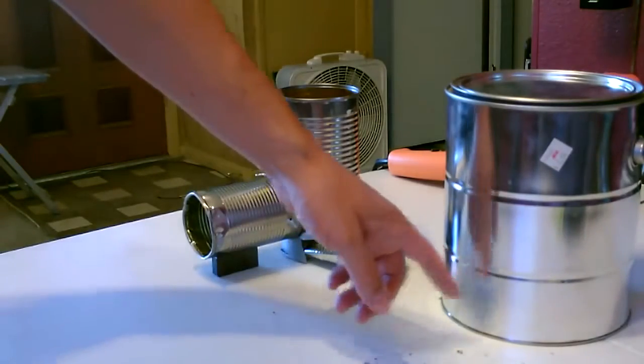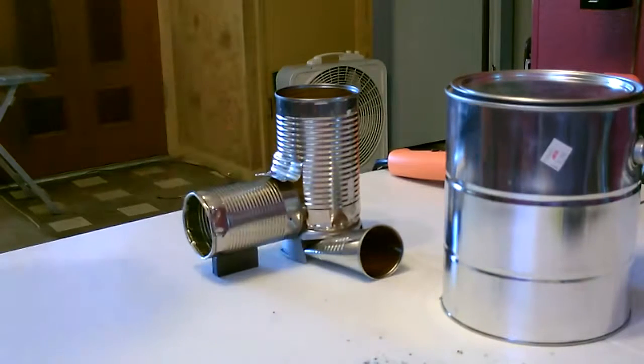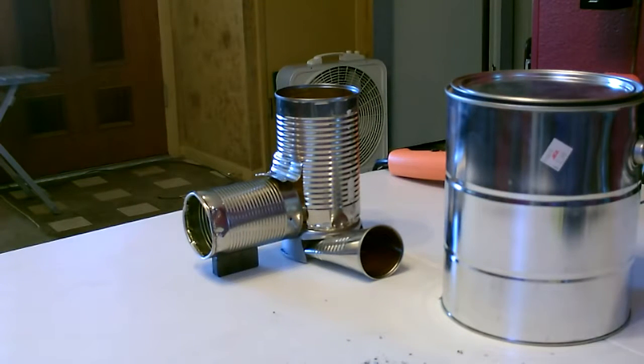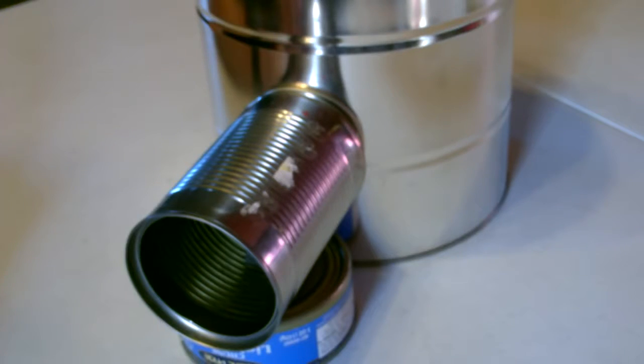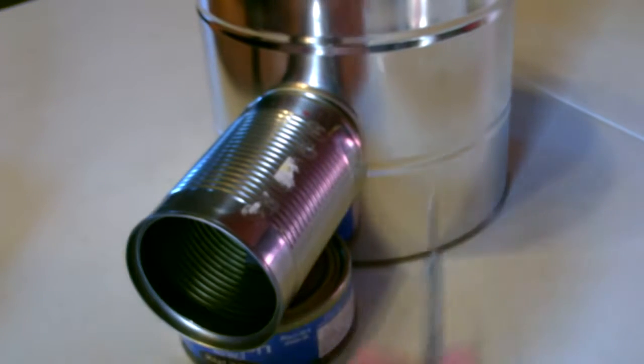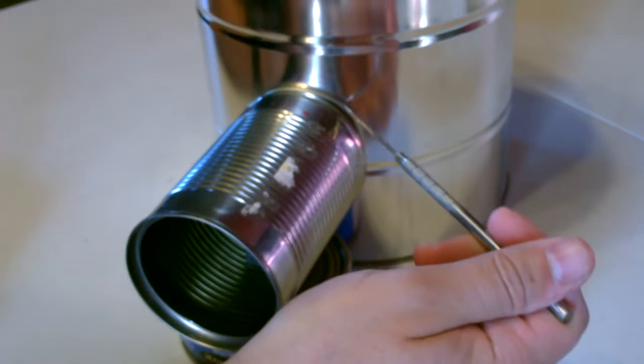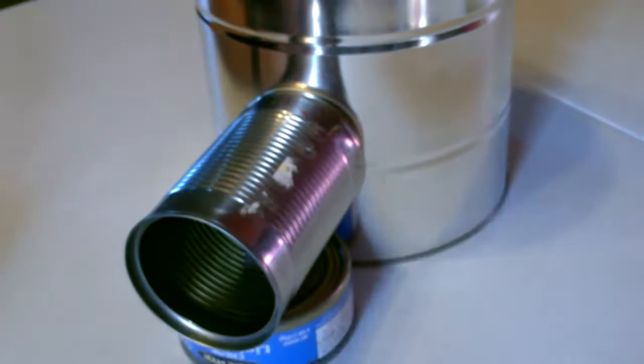Now I just have to drill the holes here and here for the two cans. You want to put the fuel feed tube about this high, the height of the tuna can, so it'll match when we put it all together. Just score the line and we'll cut the hole.